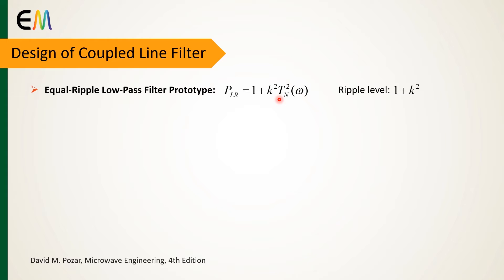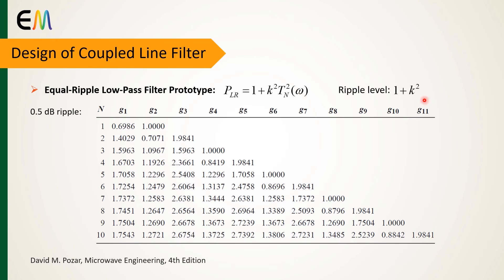Also, n is the filter order. After analysis of this equation for different orders and different ripple levels of filter, we can list the normalized values of filter elements with cutoff frequency equals to 1. This table shows the normalized values of filter elements for 0.5 decibel ripple.